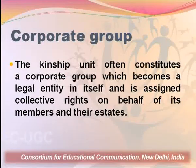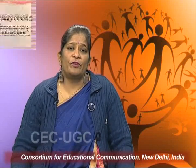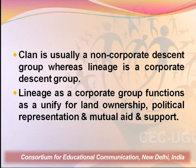The domestic group is different from a nuclear family, which refers essentially to the married couple and their children. A domestic group, in addition to one or more nuclear families, might include people without kinship links. The kinship unit often constitutes a corporate group, which becomes a legal entity in itself and is assigned collective rights on behalf of its members and the estate. A clan is usually a non-corporate group, whereas lineage is a corporate descent group — corporate because of common residence, common property holding, and participation in the same ritual activities. Lineage as a corporate group functions as a unity for land ownership, political representation, and mutual aid and support.